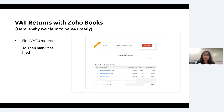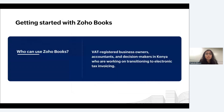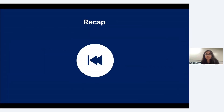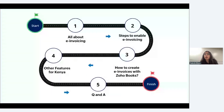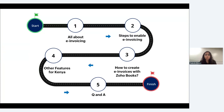Zoho Books can be used by accountants, business owners, and decision makers in Kenya who are transitioning from regular invoicing to electronic tax invoicing. Let's have a quick recap: we learned what e-invoicing is about, the steps to enable it, and how to create invoices using Zoho Books — get a middleware device, obtain the public IP, fill in the details in the Zoho Books e-invoicing page, and generate invoices. We also covered the other features built for the Kenya region.